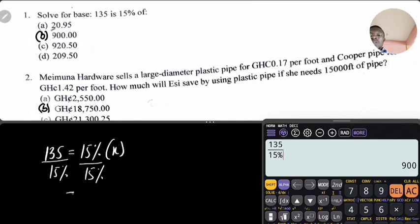You are getting x equals 900. So meaning that 135 actually is 15 percent of 900. So that will give us option B. Let's take note of that.